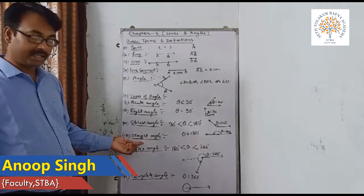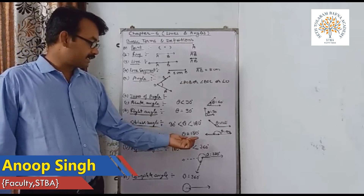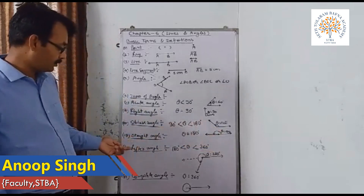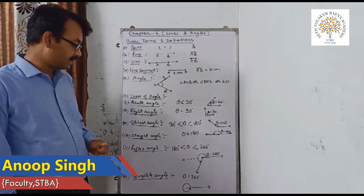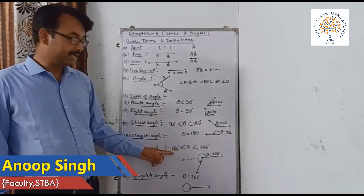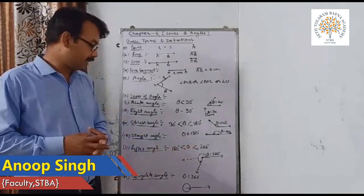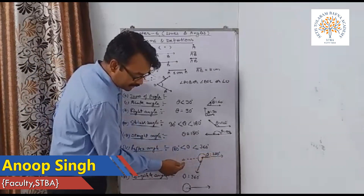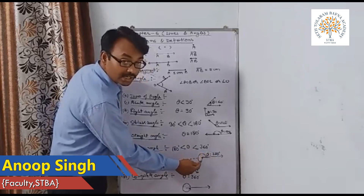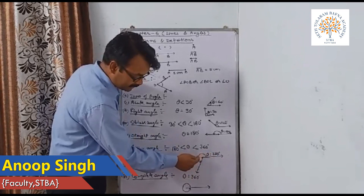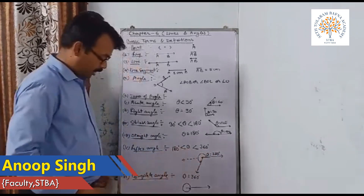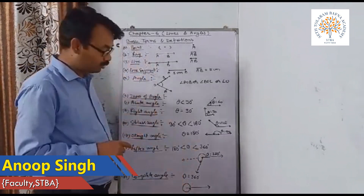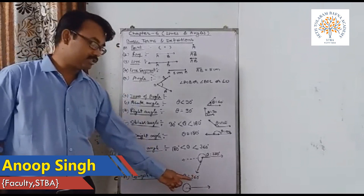A straight angle is exactly equal to 180 degrees, meaning a straight line. A reflex angle is greater than 180 degrees but less than 360 degrees. For example, if the angle goes beyond a straight line, that is a reflex angle. A complete angle is when the angle completes from 0 to 360 degrees — a complete round — so theta equals 360 degrees.